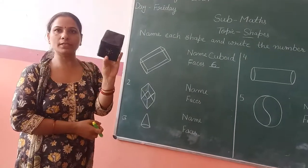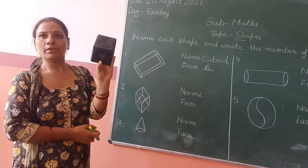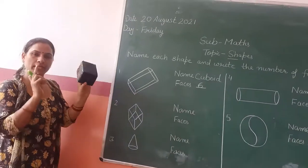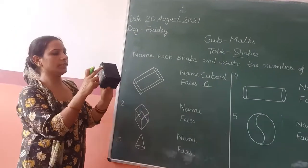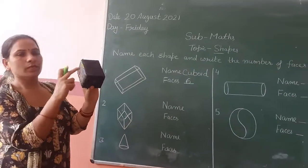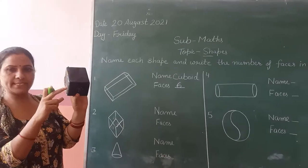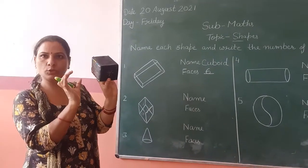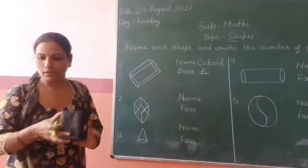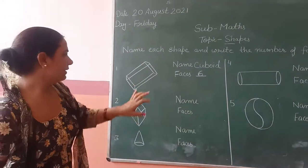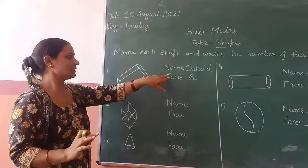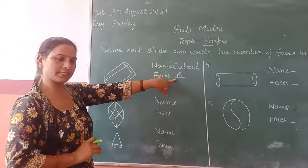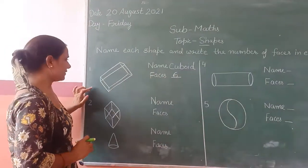So we will count the faces. The face count is 6 - 2 sides longer and 2 sides smaller. So the face count is 6. Next...